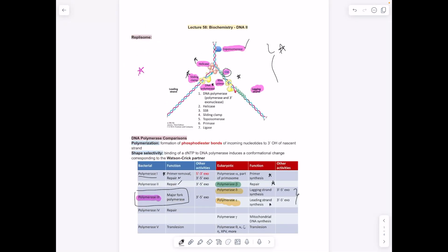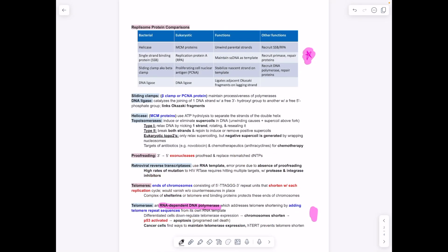We have these different proteins: helicase, which is unwinding the parent strand—the eukaryotic version is MCM proteins. The single strand binding proteins, the eukaryotic version is RPA, replication protein A. The sliding clamp, aka the beta clamp, is in eukaryotes the proliferating cell nuclear antigen PCNA. Then both use DNA ligase.